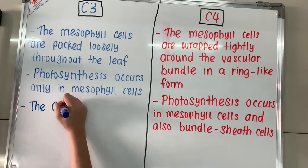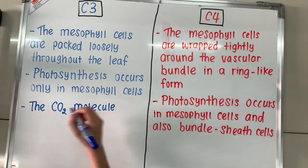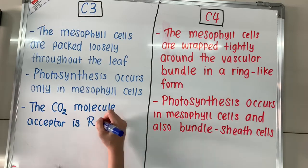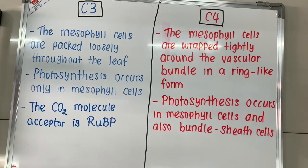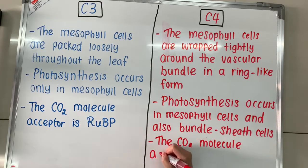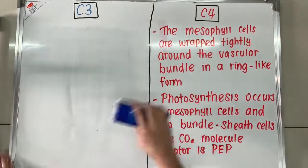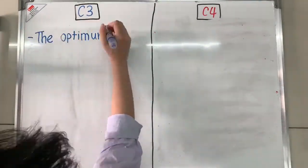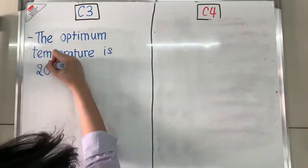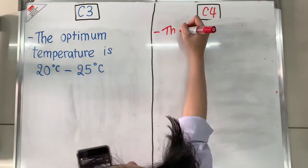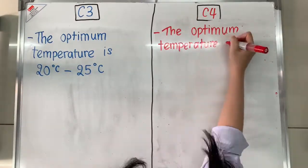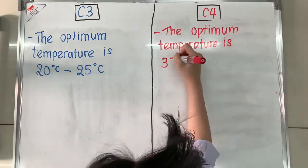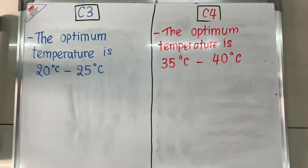In C3 plants, the CO2 molecule acceptor is RuBP. On the other hand, in C4 plants, the CO2 molecule acceptor is PEP, also known as phosphoenolpyruvate. The optimum temperature of C3 plants is 20 to 25 degrees Celsius, while the optimum temperature of C4 plants is 35 to 44 degrees Celsius.